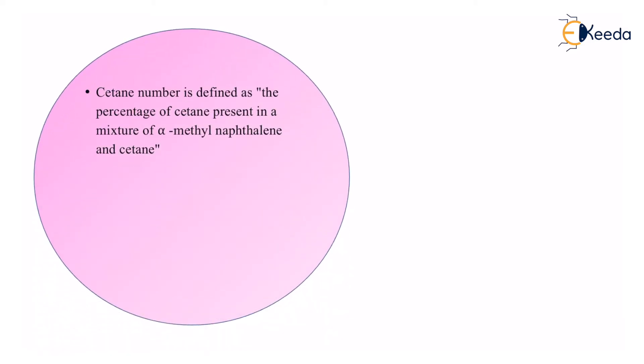Cetane number is defined as the percentage of cetane present in the mixture of alpha-methyl naphthalene and cetane. So whenever we are going to study about the diesel component, the knocking characteristics of a diesel compound, it is very important for us to know the cetane number of it.